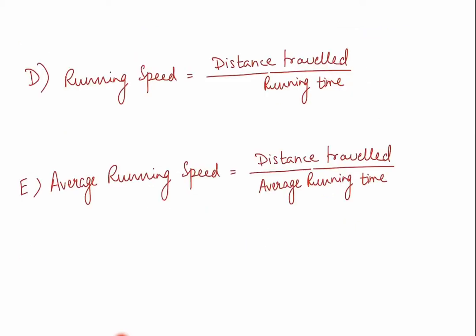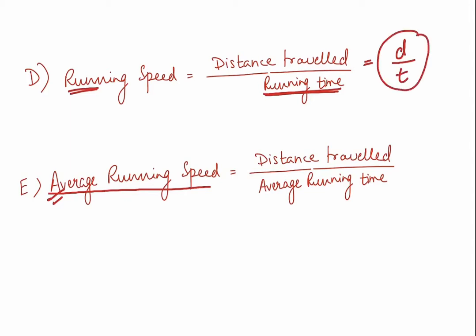For running speed, we take running time as a reference, so we do not include stop time. The formula for running speed is distance divided by running time. When we take the average of these running speeds, it becomes the average running speed.